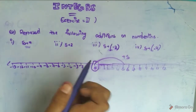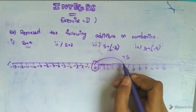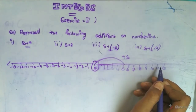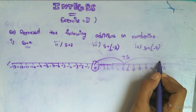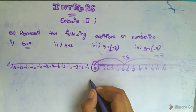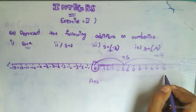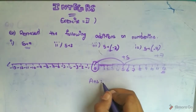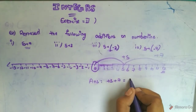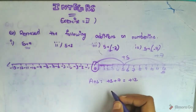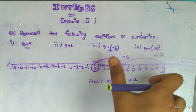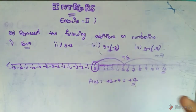We have to start from 0. The second integer is plus 7. So we move 7 steps further. Plus 5 plus 7 gives us plus 12. This answer will be confirmed when we do it on the number line. So the answer is plus 12.